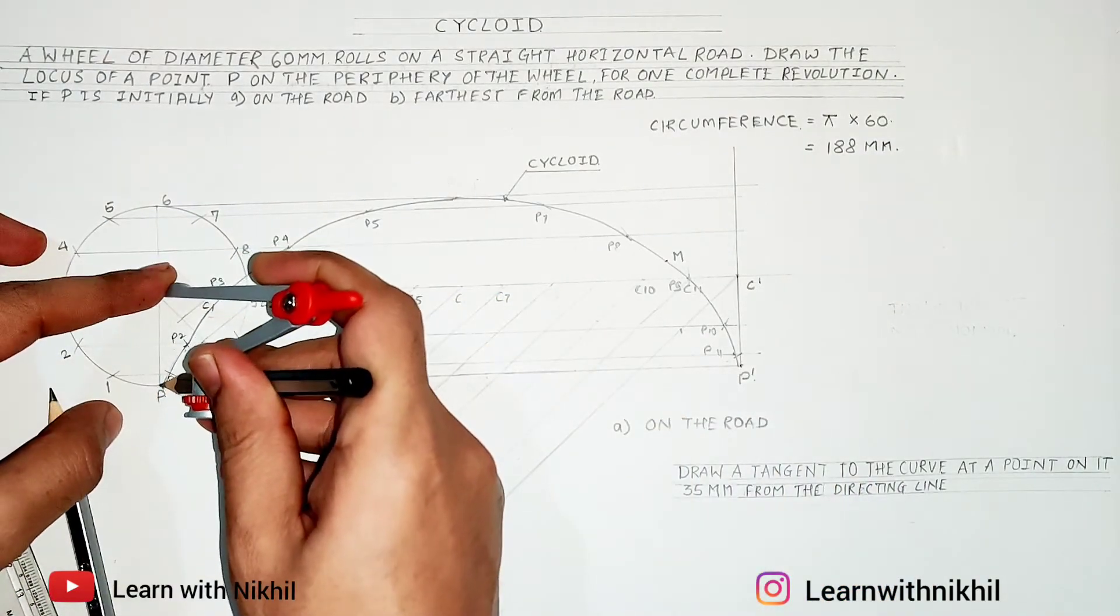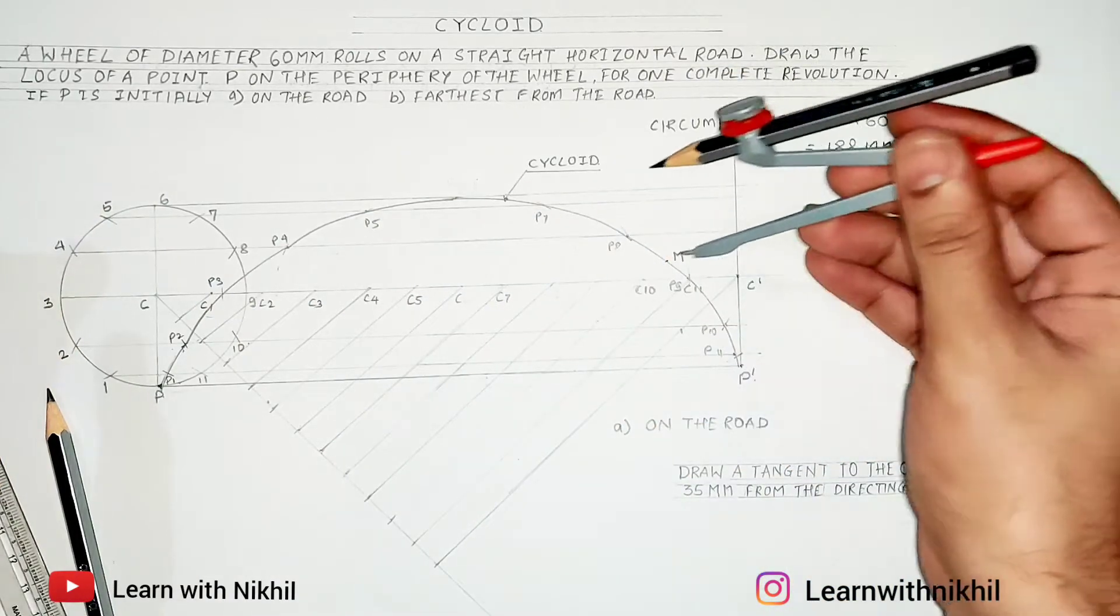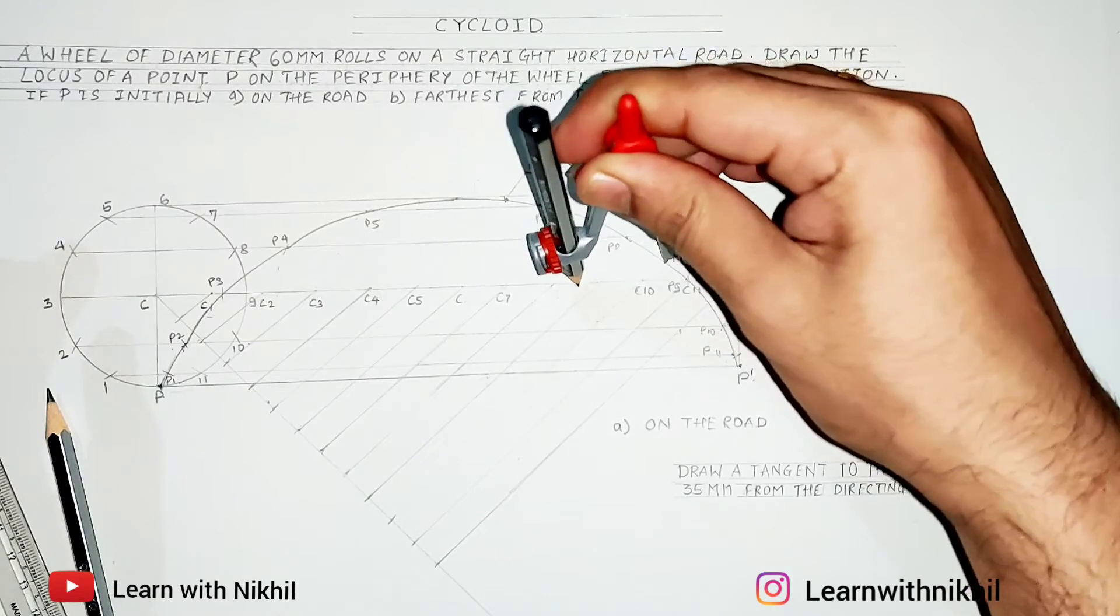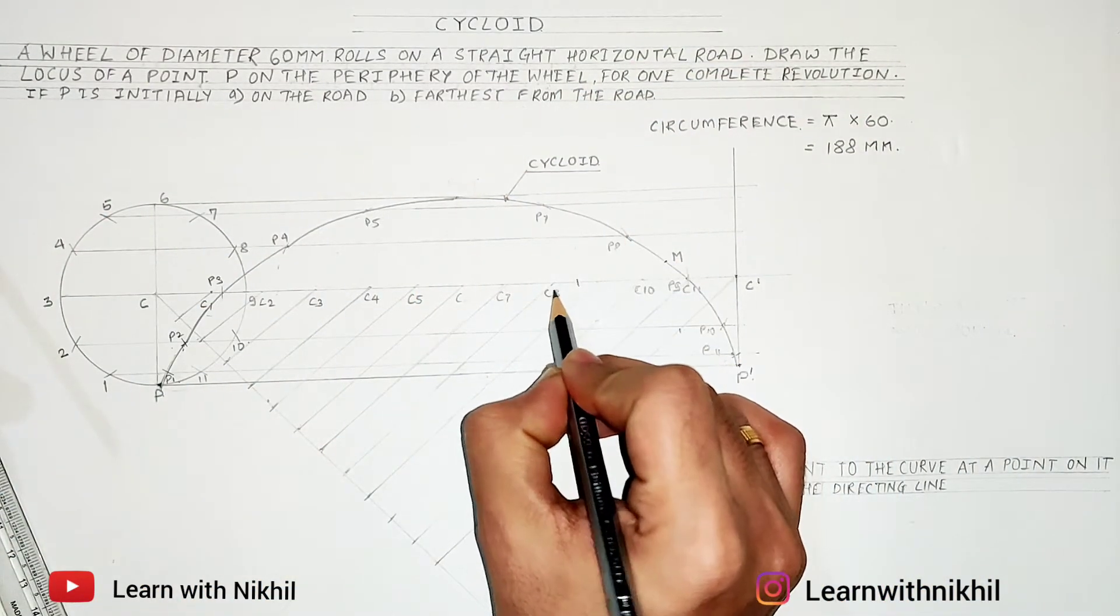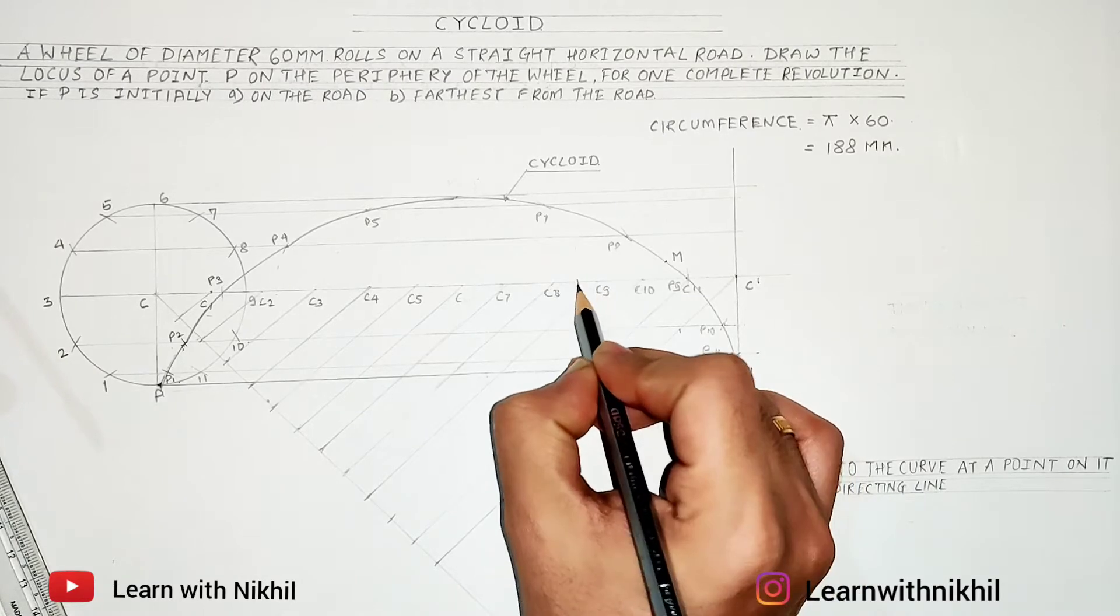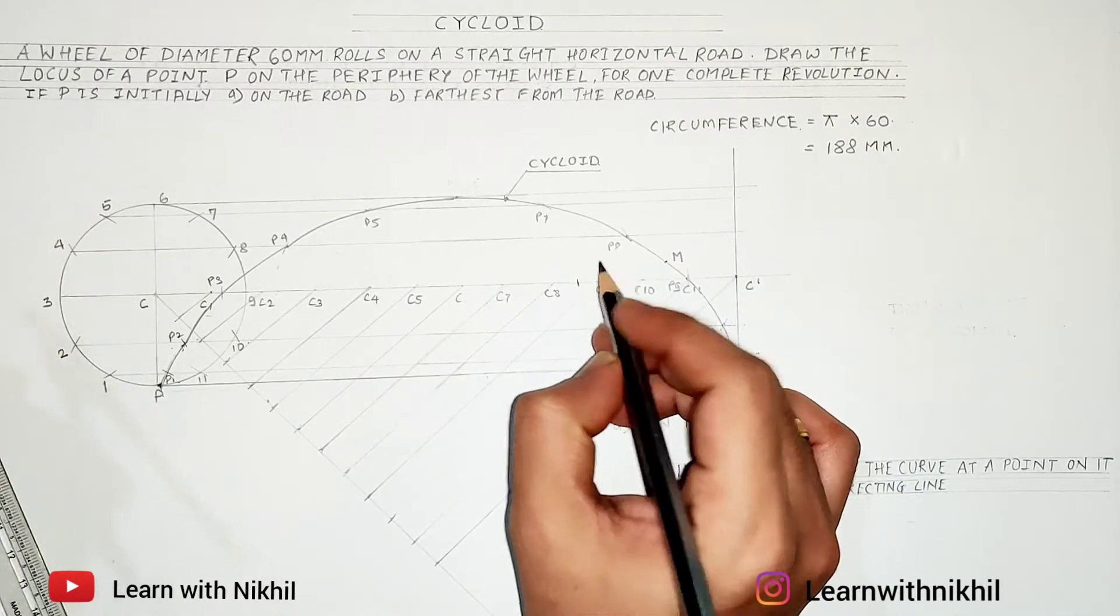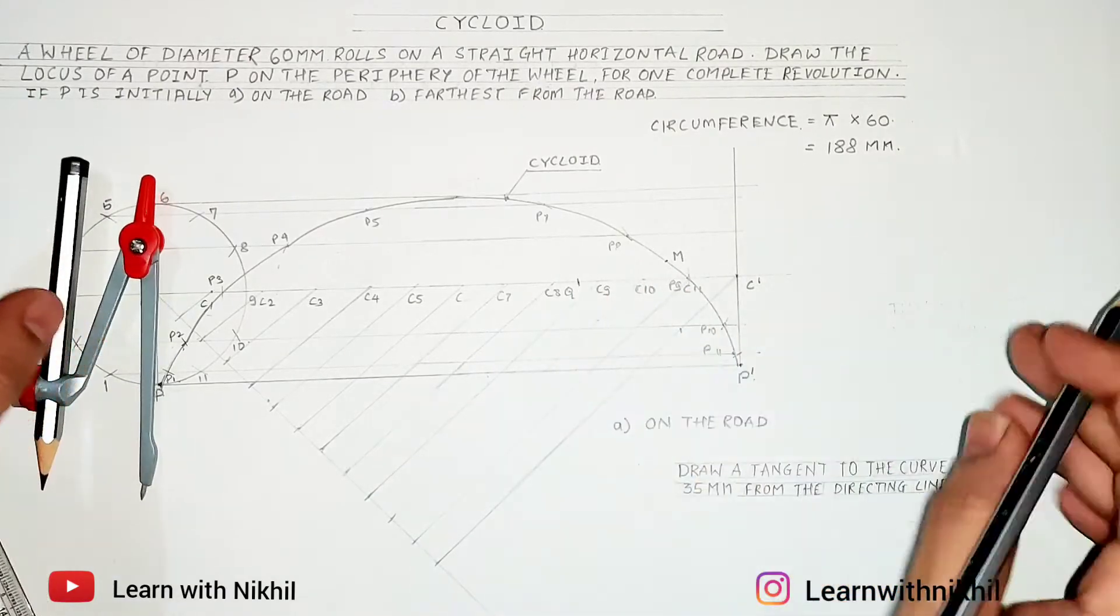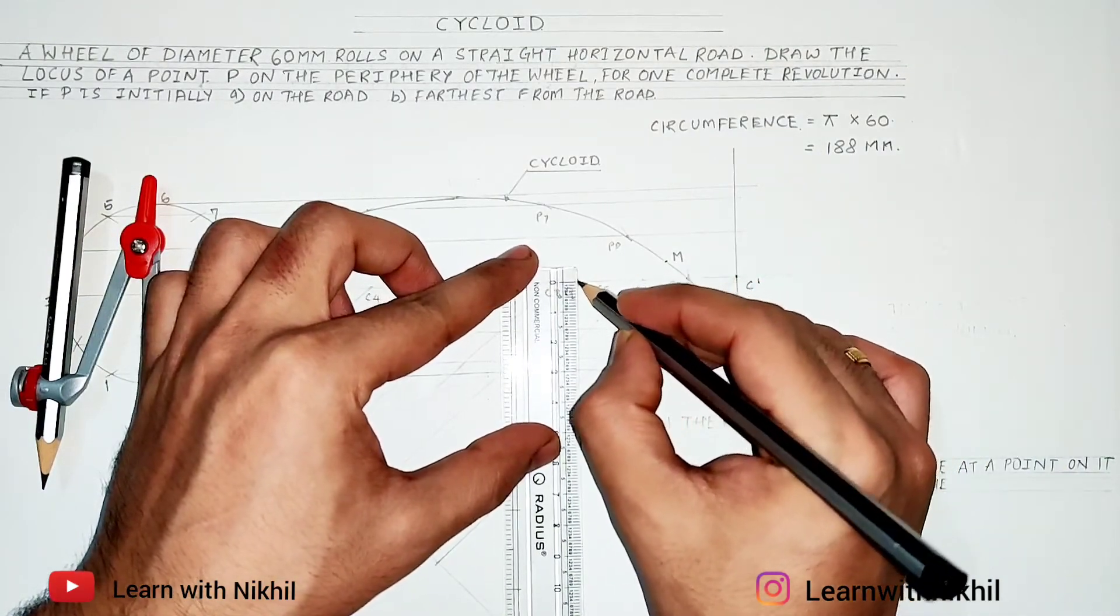the radius of this circle, keep it on M and cut on the center line. The center line, just write this C8 and C9, and mark this curve or the cut as Q. Now through Q I'll draw a perpendicular line till the directing line.